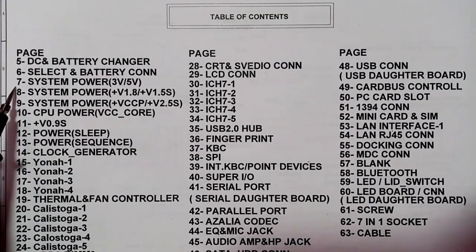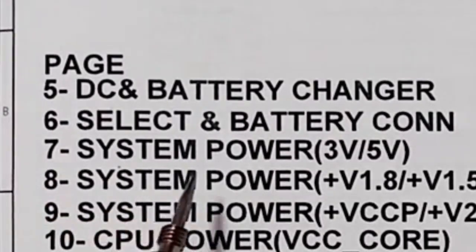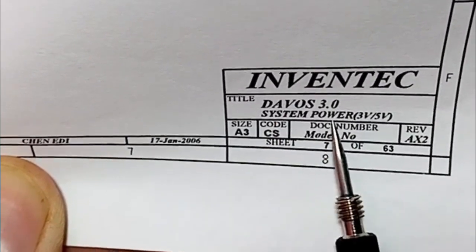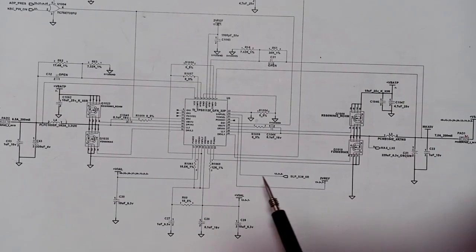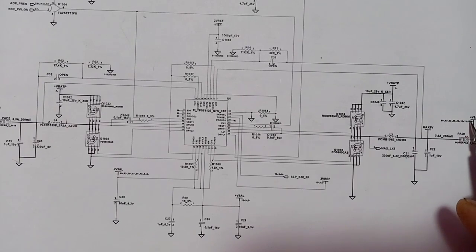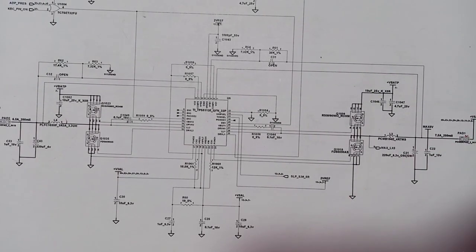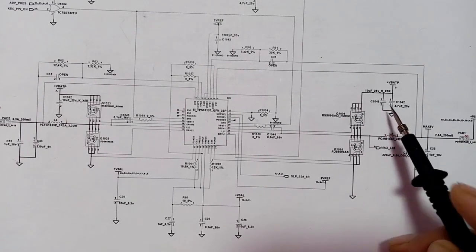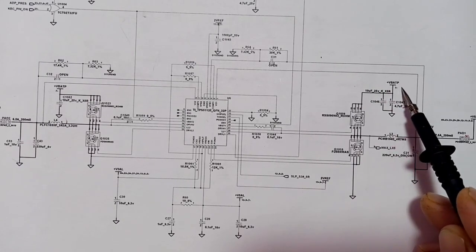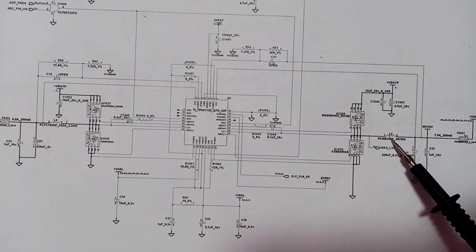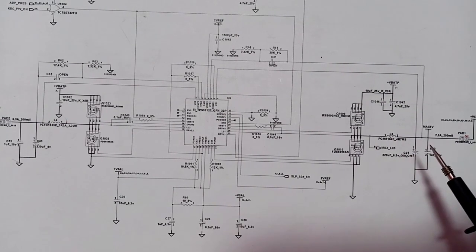In page 7 we have the system power 3 volt and 5 volt circuit. Here we have the control IC, and here we have the 5 volt channel. In every channel you will find MOSFETs and ceramic capacitors — two or more in the input. The VBAT here equals 19 volt, and we have two MOSFETs and an inductor.